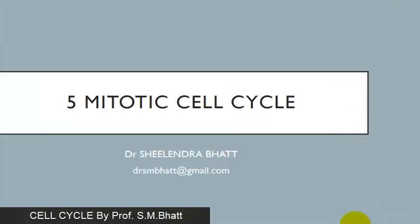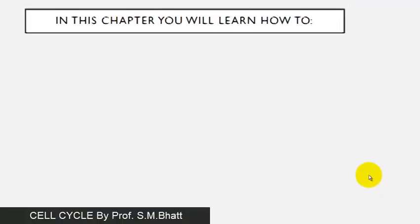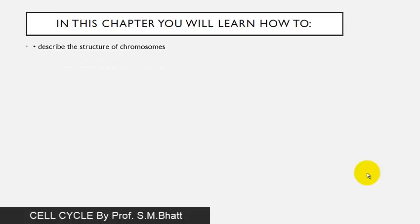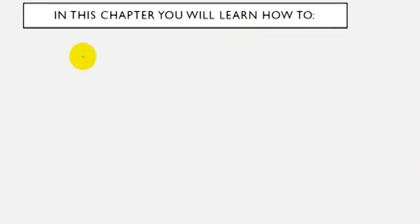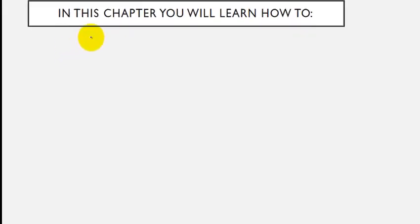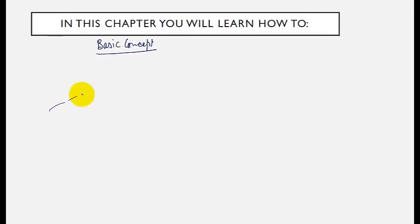Hello students. Today in this lecture we'll discuss the mitotic cell cycle, including the behavior of chromosomes and the outline of the cell cycle. The cell cycle is a process a cell goes through each time it divides — a series of steps during which chromosomes and other cell material double, and then the cell divides into two daughter cells, each receiving one copy of the doubled material.